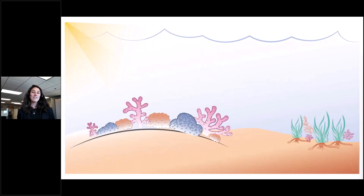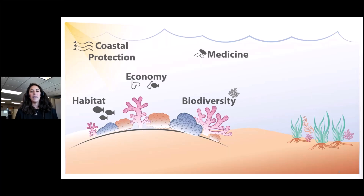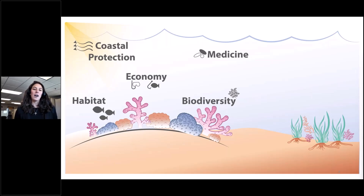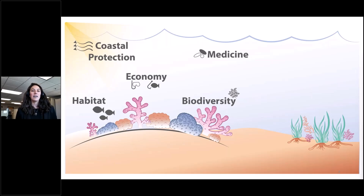Coastal ecosystems such as coral reefs are really vital to our ecosystems and coastal communities. For example, over 25% of fish spend some portion of their life on coral reefs, contributing to the biodiversity within our oceans. Corals are also the basis of our economies, such as tourism and fisheries, and they provide coastal protection, which can amount to up to $11 trillion a year.